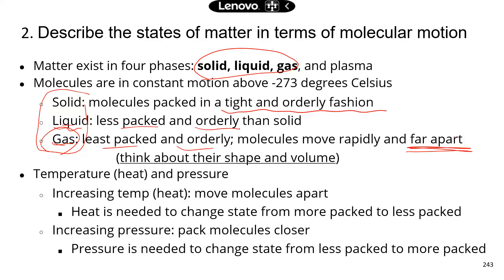If that's hard to remember, you can think about the shape and volume of different states of matter. A solid has a defined shape and defined volume. A liquid has a less defined shape, but you can still measure the volume. Gas doesn't have a defined shape or volume. So as matter transitions from solid to gas, molecules are less tightly packed and in a less orderly fashion.